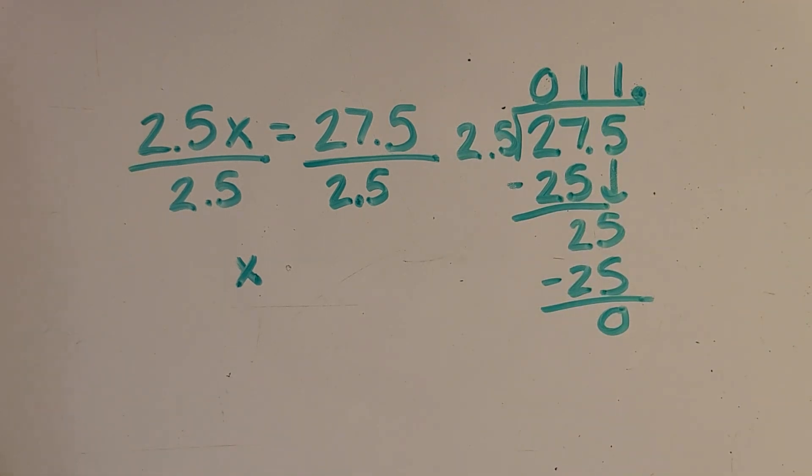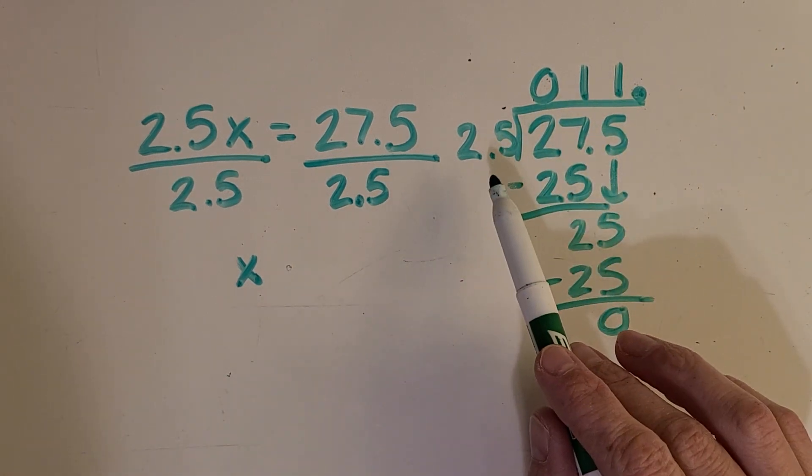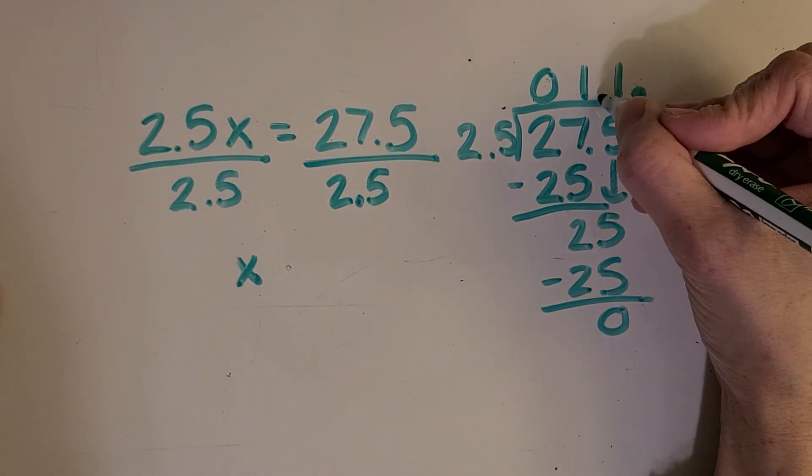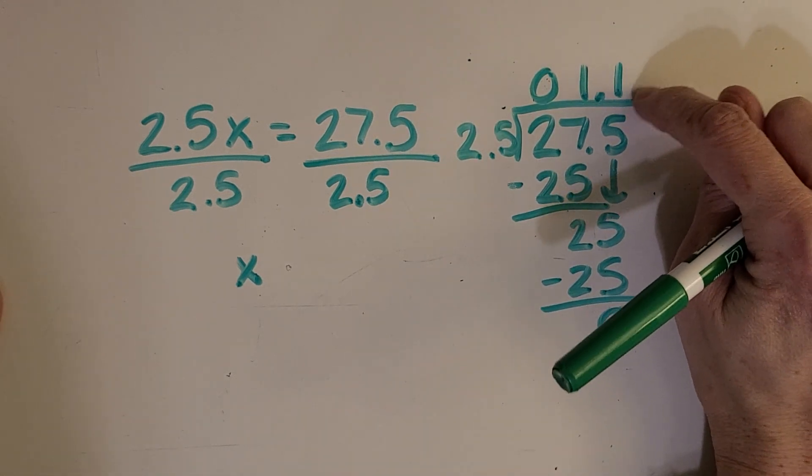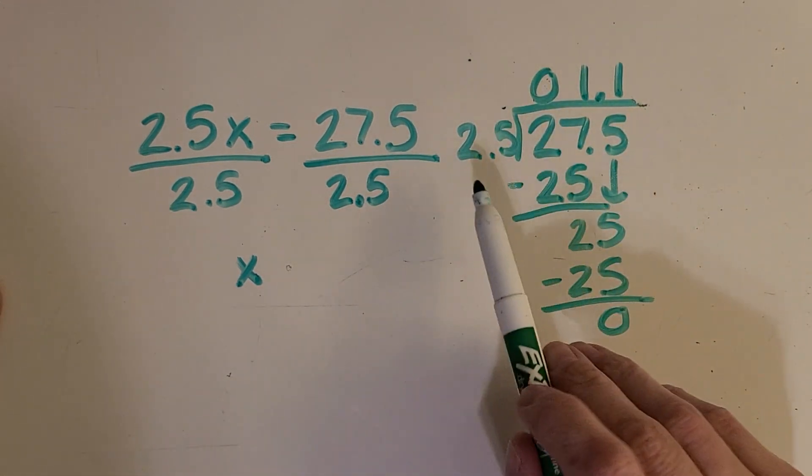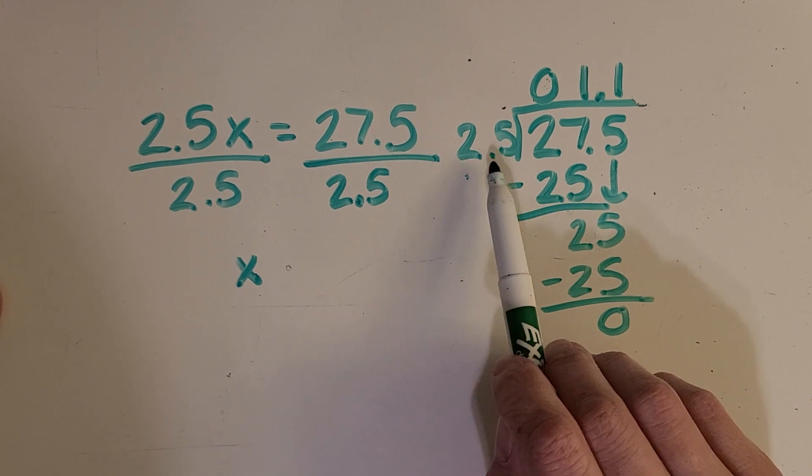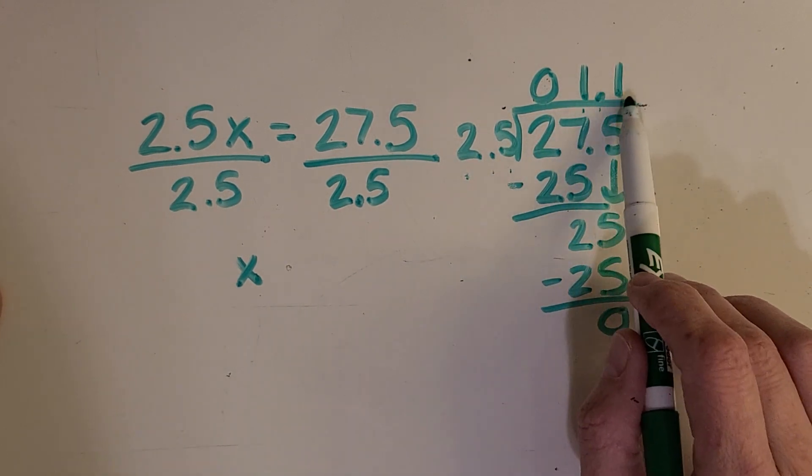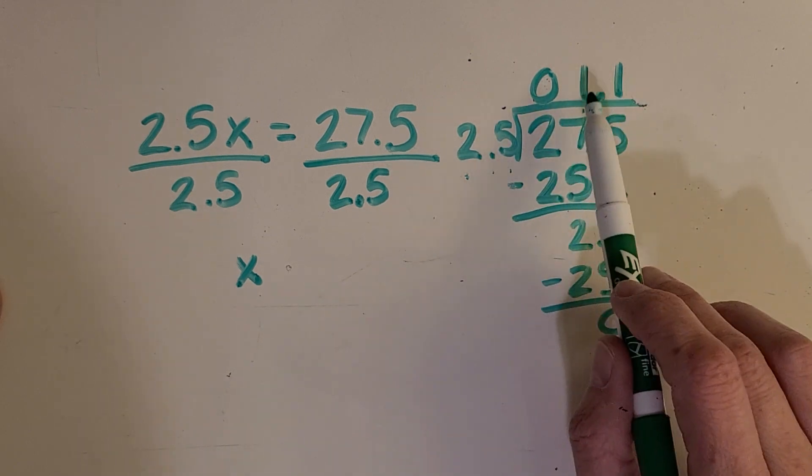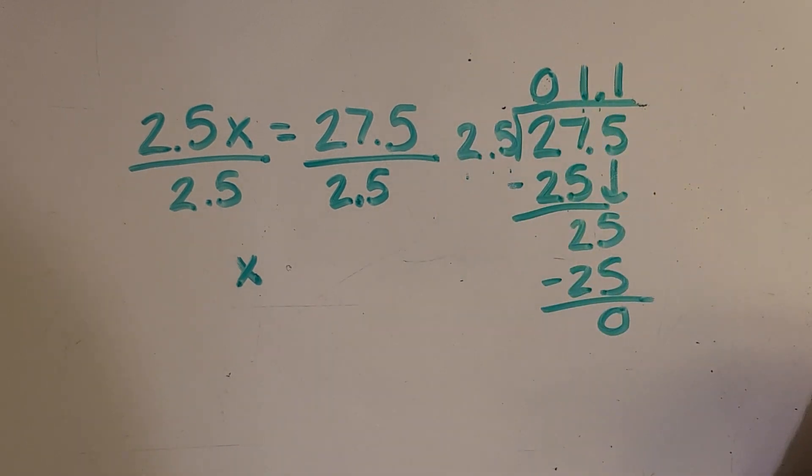And I can always check with my thinking here, because if I did put it right here accidentally, I don't feel like that's going to get us a big enough answer. Because look, 2 and 5 tenths times 1 and 1 tenths. It sounds like it's going to be kind of a small answer, right? Because 2 times 1 is just 2.